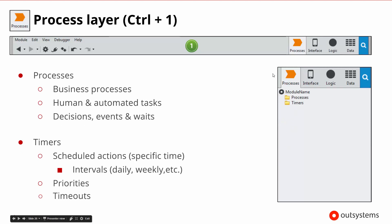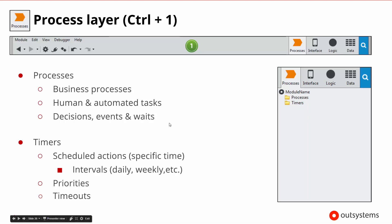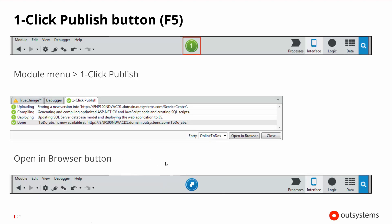Last but not least, there is the processes area. Inside the processes area, there are processes — basically business processes of any type. There are capabilities for human and automated tasks, decisions, and other things. There are also timers, where we can schedule an action or a piece of logic to run and tell it when it needs to run. Processes can be quite nice.